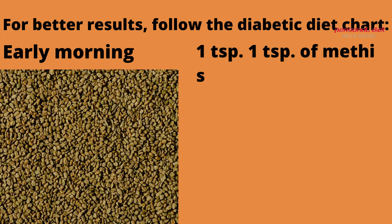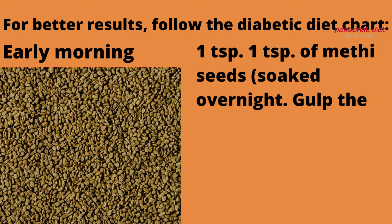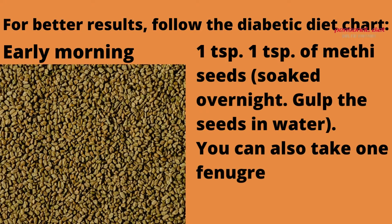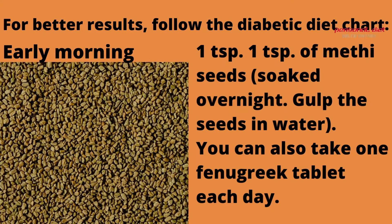Early morning: 1 teaspoon of methi seeds, soaked overnight — gulp the seeds with water. You can also take 1 fenugreek tablet each day.